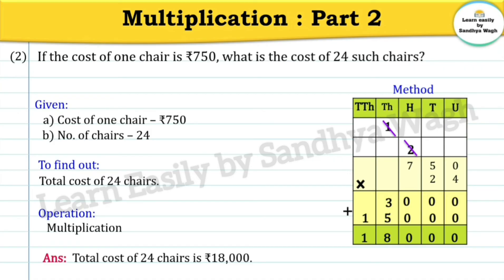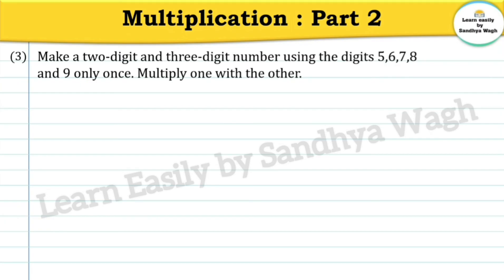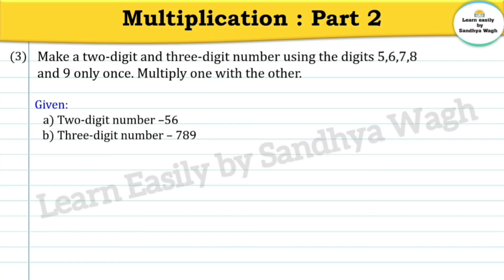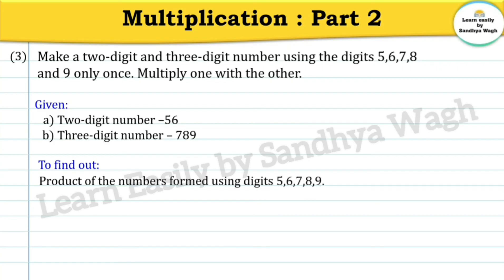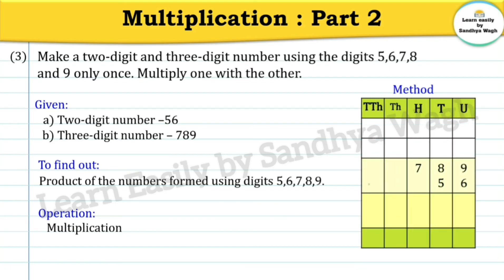Let's see the next word problem. Make a 2-digit and 3-digit number using the digits 5, 6, 7, 8, and 9 only once. Multiply one with the other. Using digits 5, 6, 7, 8, and 9, we form a 3-digit number and a 2-digit number. Here we form the 2-digit number 56 and the 3-digit number 789. We need to find the product of numbers formed using digits 5, 6, 7, 8, and 9. Operation: multiplication. Now let's multiply 789 by 56.